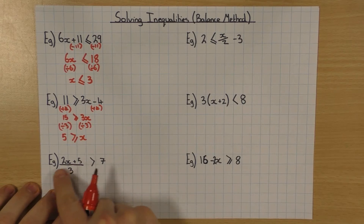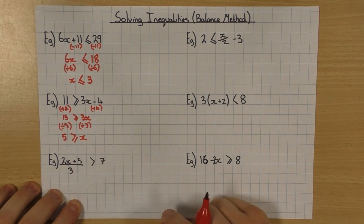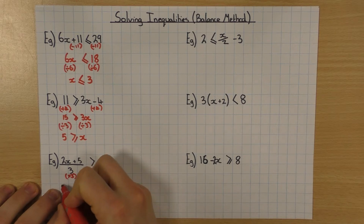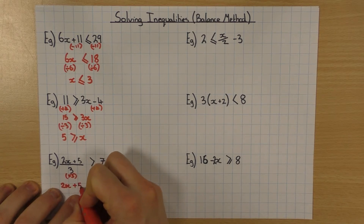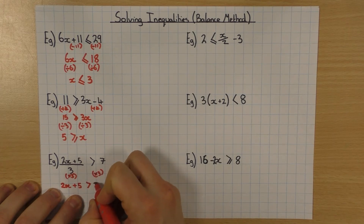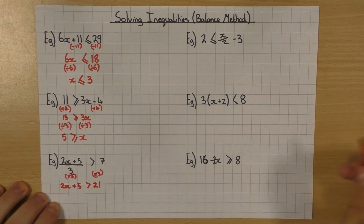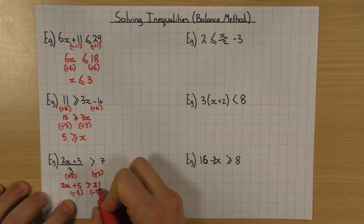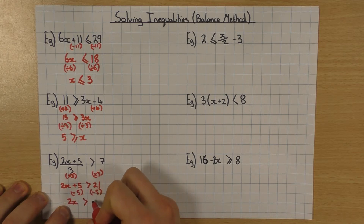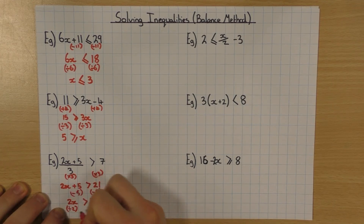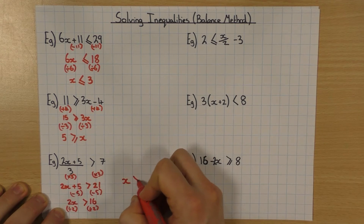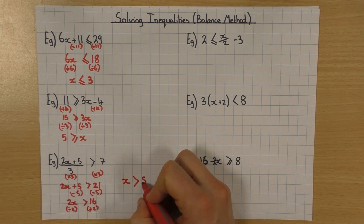This one here: 2x plus 5, all divided by 3. First thing I want to do is get rid of that divide by 3, so I'm going to do the opposite and times both sides by 3. Which will leave me with 2x plus 5, and then the inequality sign stays the same, and then 21. Then it's just the same as the previous examples — I'm going to minus 5, so I'll be left with 2x, inequality sign stays the same, and then 21 minus 5 is 16. And then I'm going to divide both sides by 2 to get rid of that 2 in front of the x. So x, inequality sign stays the same, 16 divided by 2 is 8.